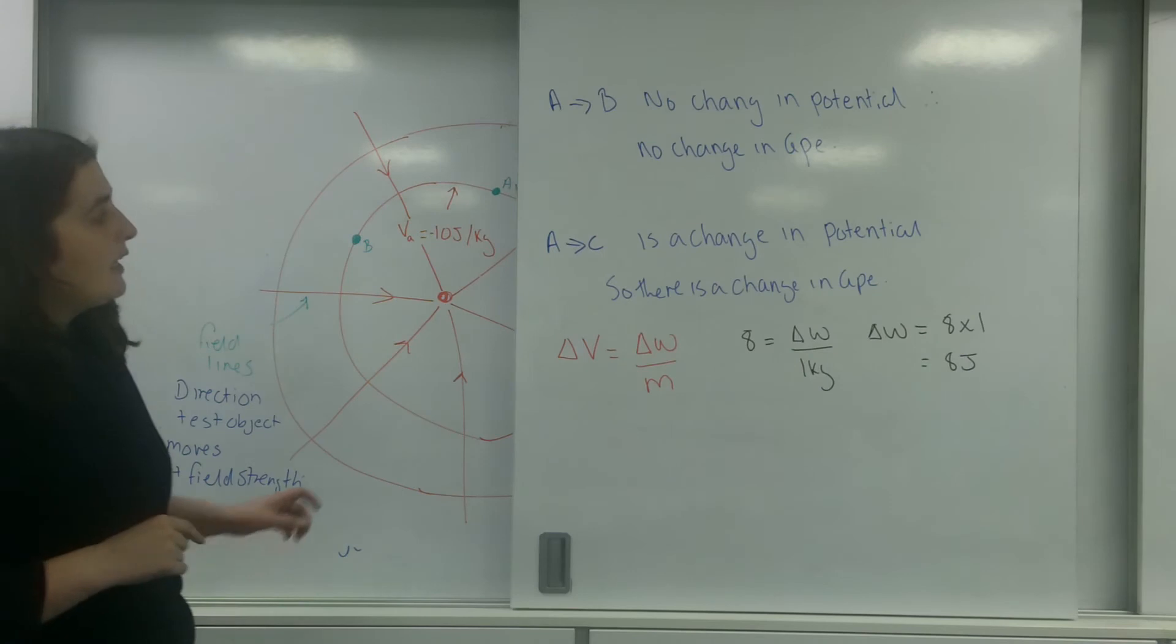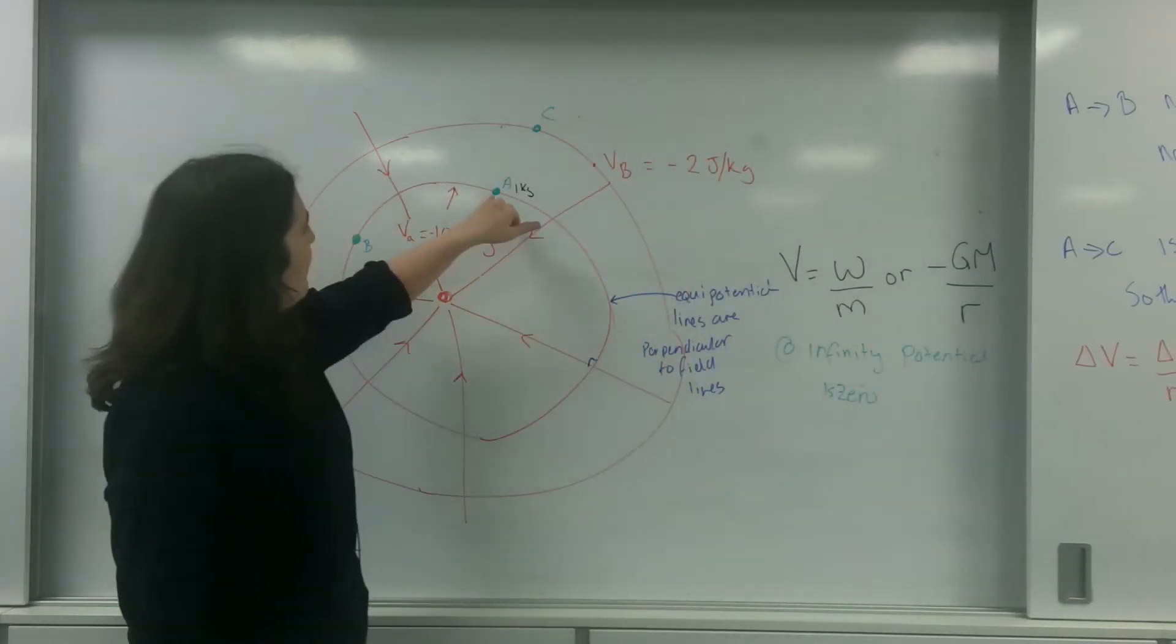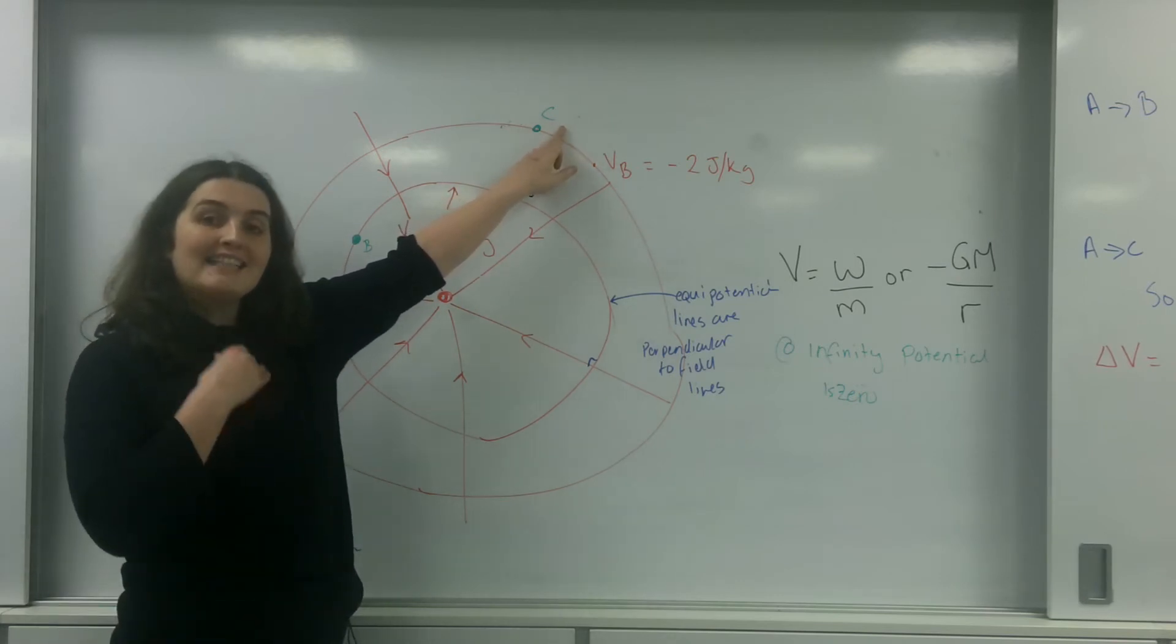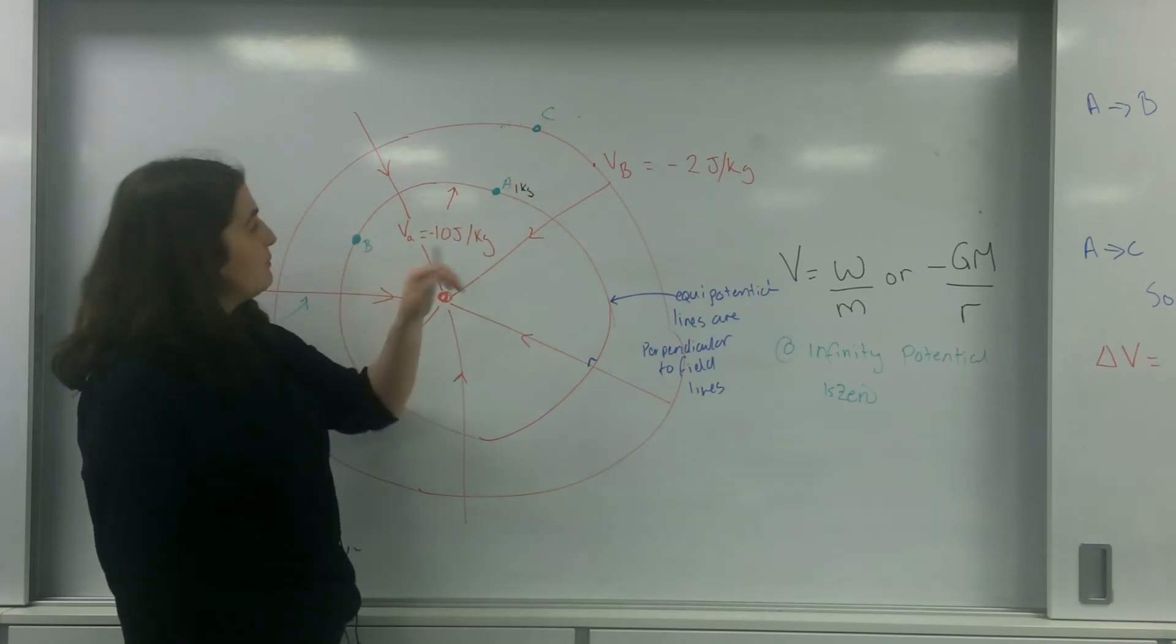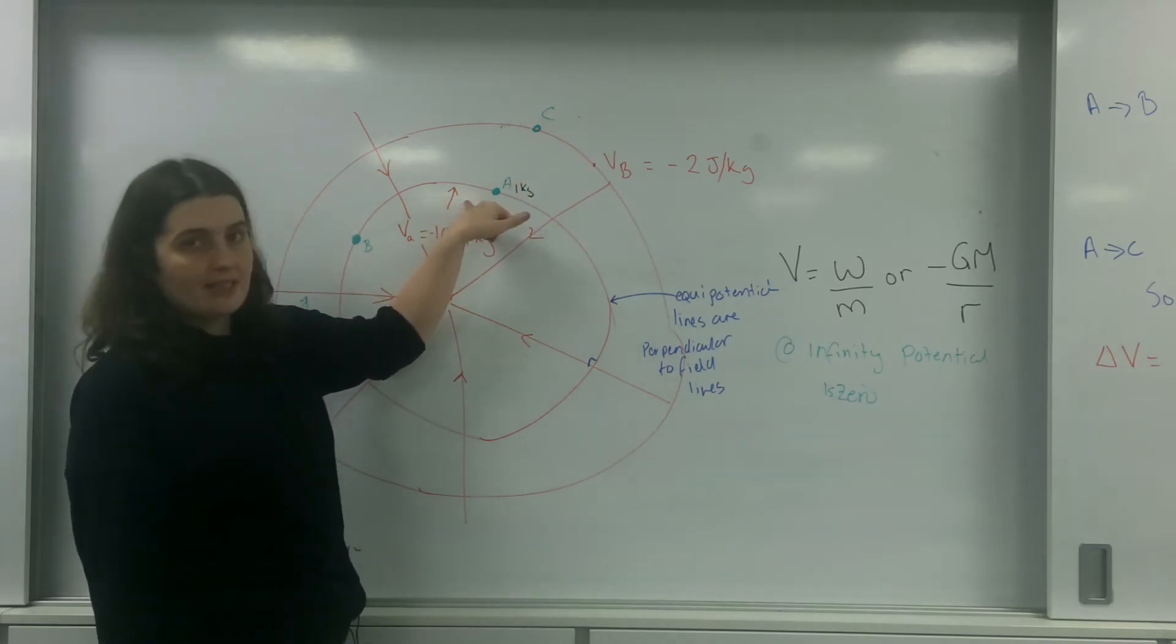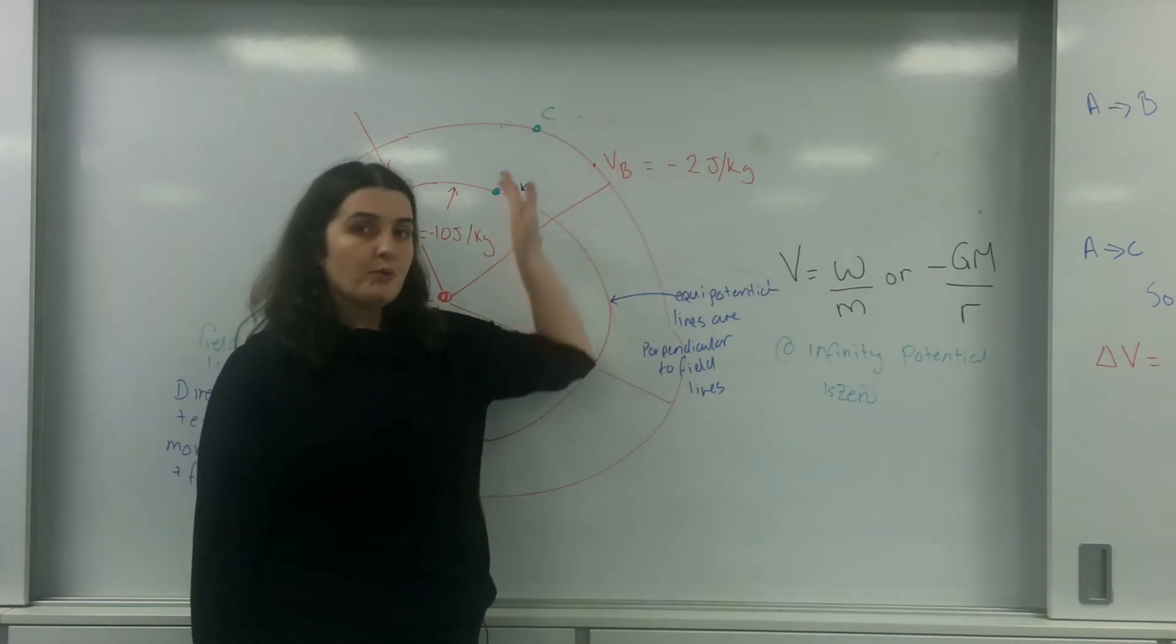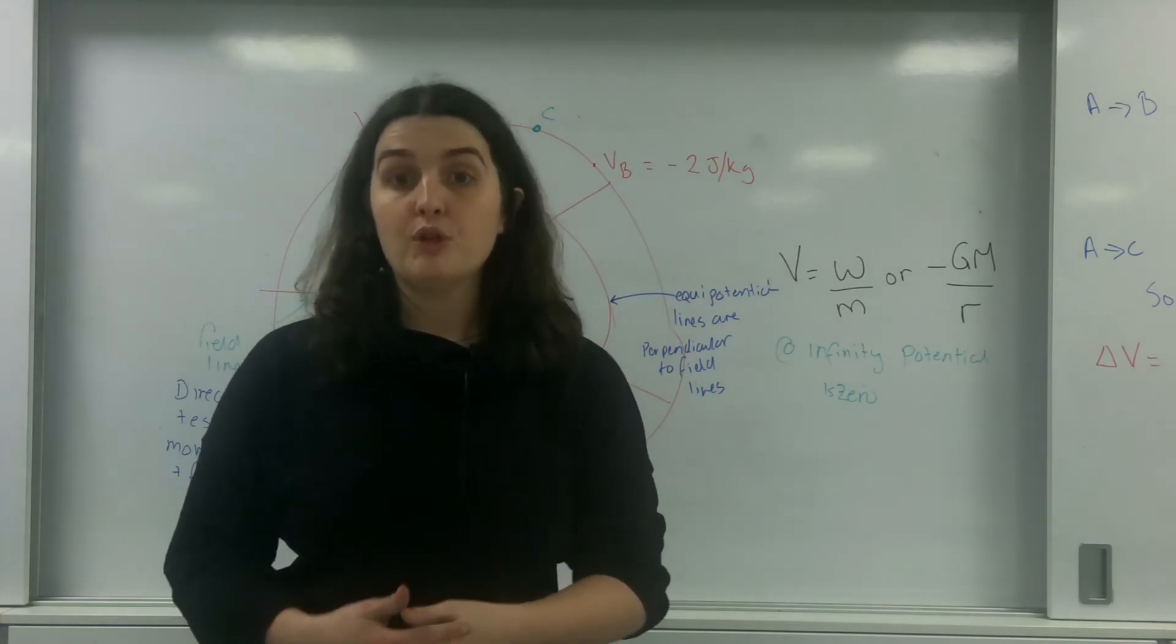So, as you can see, my 1 kilogram mass here, if I was going to move it from A to C, would require me to add 8 joules of energy into this. And you can see this by, this one here is minus 10 joules per kilo. This is minus 2 joules per kilo. But to just move it within the field, I would need to add 8 joules in total.